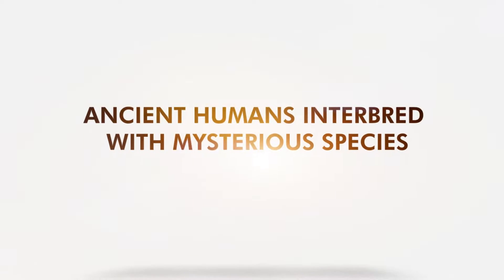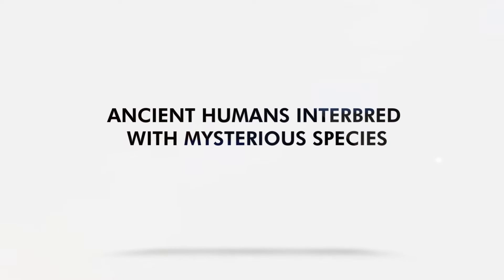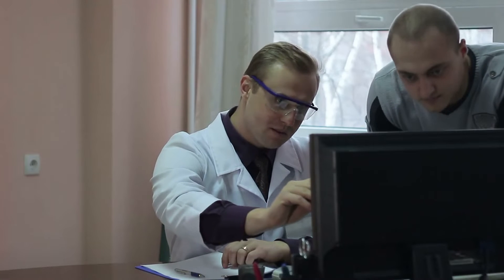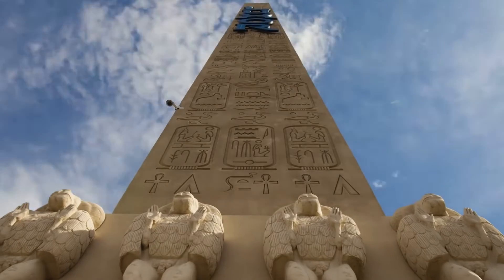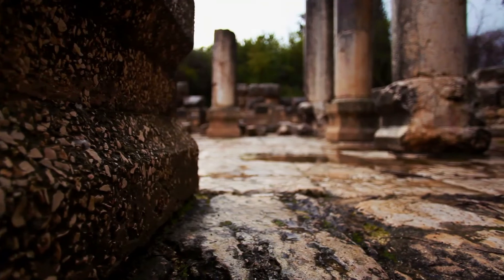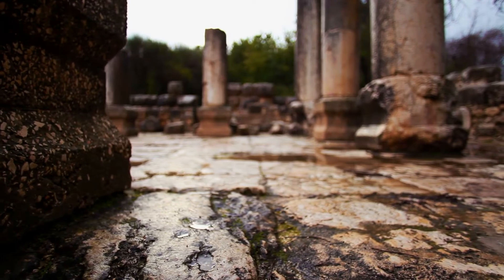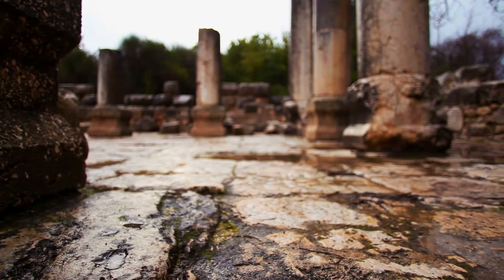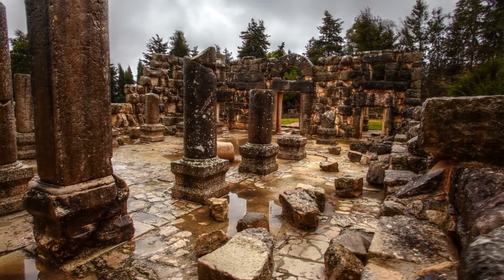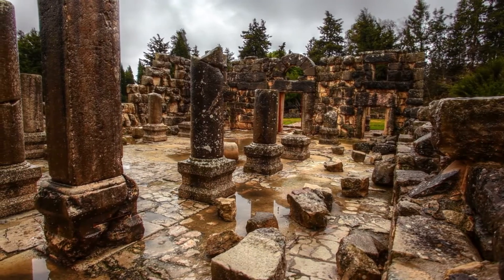Ancient humans interbred with a mysterious species. Scientists have found that ancient humans mated with a mysterious species around 700,000 years ago. The study states that the unknown population must have separated from others at least a million years before then.